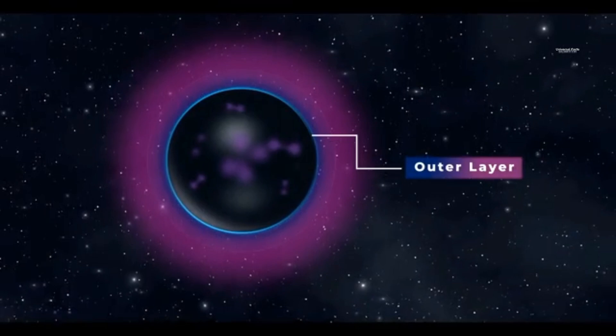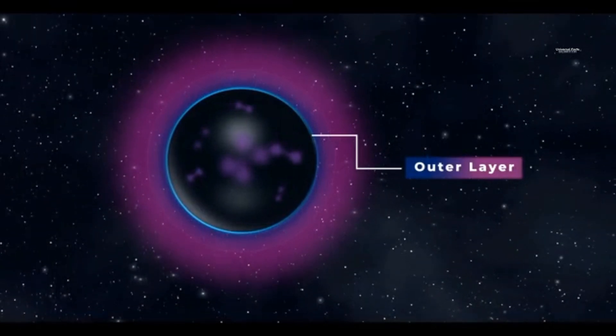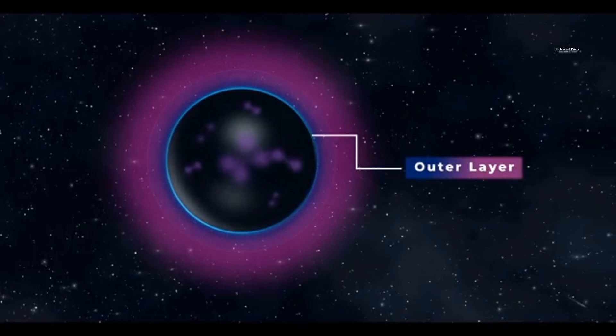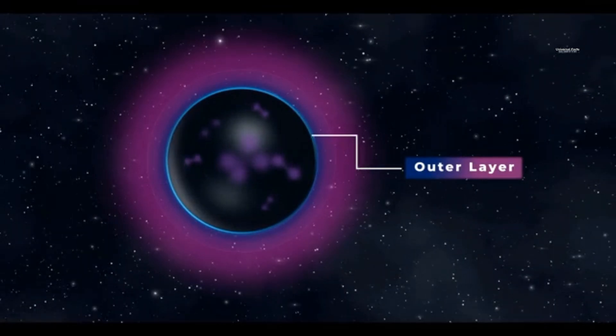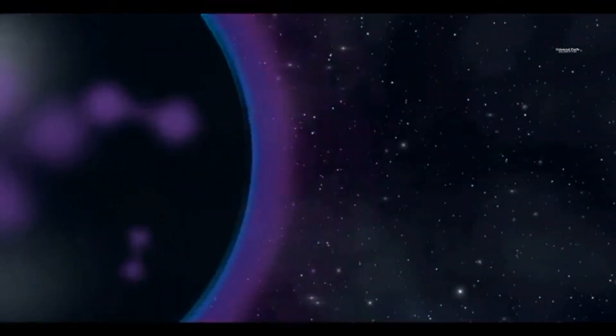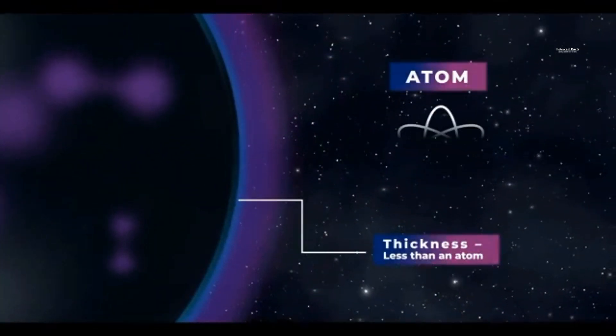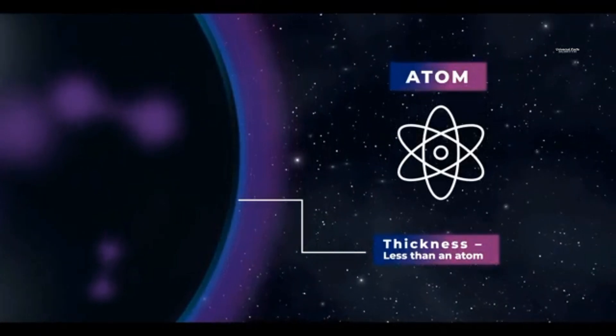The outer layer of a gravistar is made of normal matter, which constitutes only 5% of the universe. Remarkably, this outer layer is so thin that even an atom would seem massive in comparison.